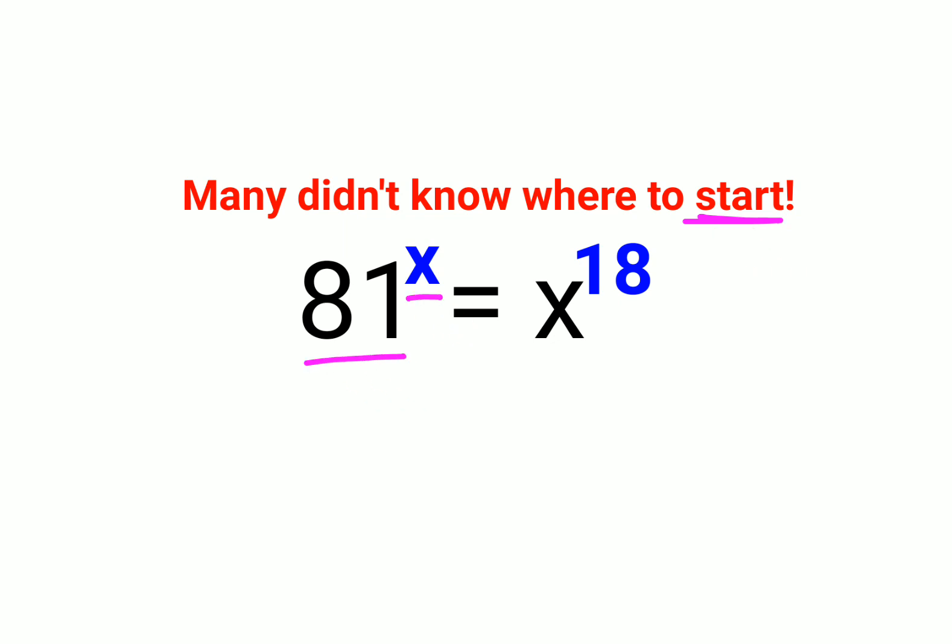Here we have 81 raised to x and here we have x raised to 18. The first thing you should do in this kind of scenario, let me write it over here. We have 81 raised to x and here we have x raised to 18. In that case, first we'll take the numbers on one side.